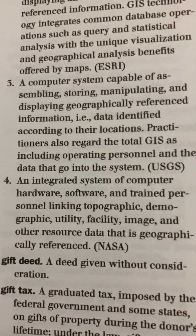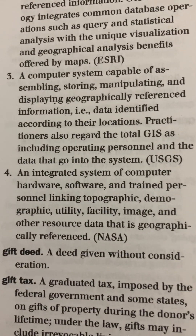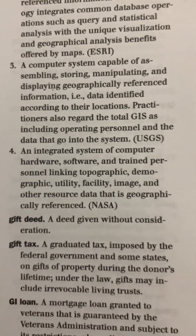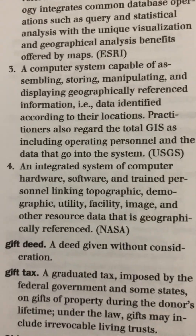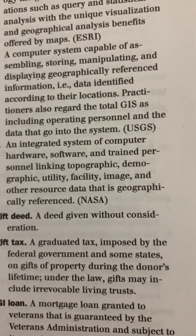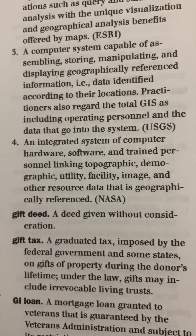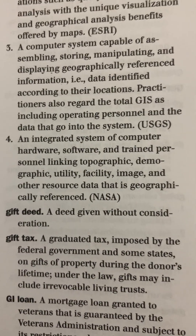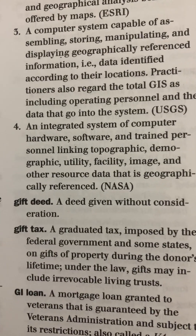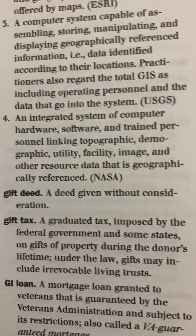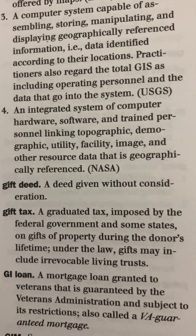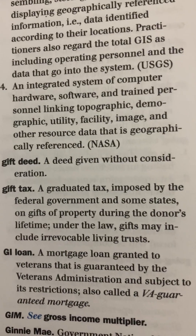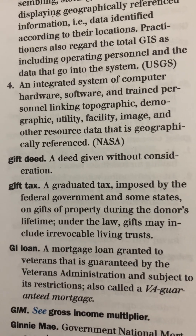Number 3: a computer system capable of assembling, storing, manipulating, and displaying geographically referenced information — for instance, data identified according to their locations. Practitioners also regard the total GIS as including operating personnel and the data that go into the system. USGS. Number 4: an integrated system of computer hardware, software, and trained personnel linking topographic, demographic, utility, facility, image, and other resource data that is geographically referenced. NASA.